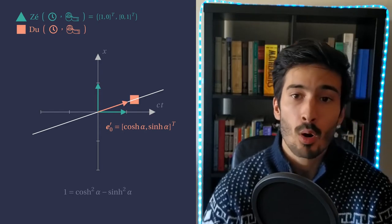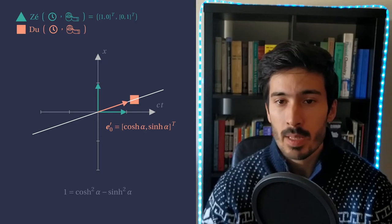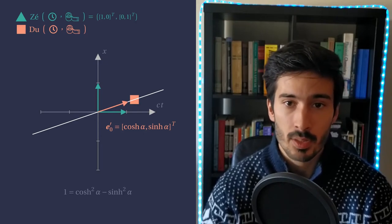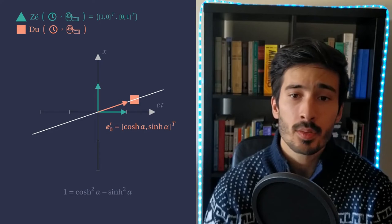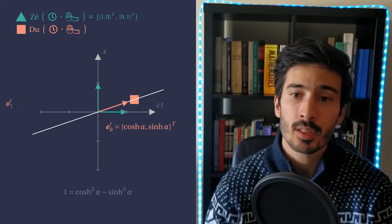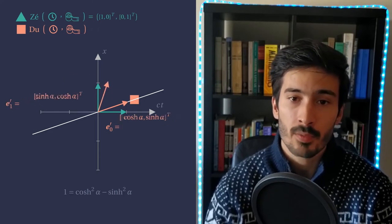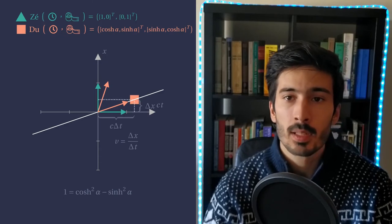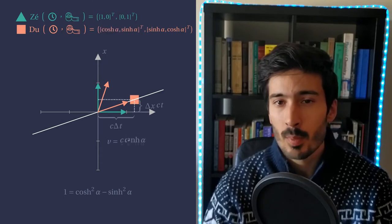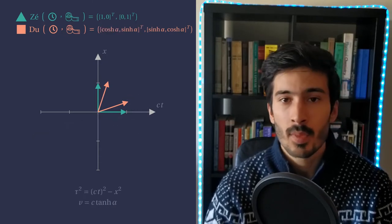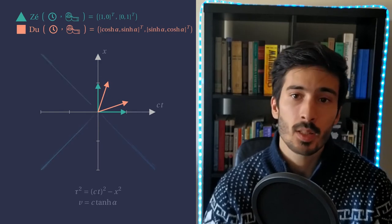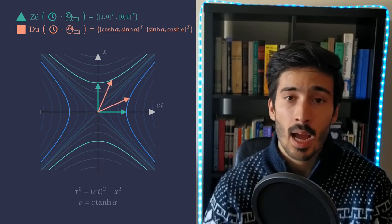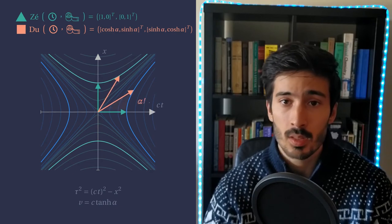The vector corresponding to the measuring stick must be orthogonal to the clock vector. However, it is not the usual orthogonal we are used to. We must consider that lengths are now computed using the difference of the squares. Thus, Du's measuring stick can be written using the relationship between hyperbolic functions. So now the velocity is given by the hyperbolic tangent of alpha. This parameter is called the rapidity, and if we vary the rapidity, we can see that the lines of constant proper time trace hyperbolas instead of circles now.